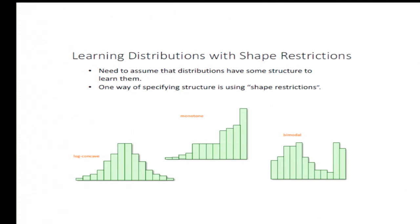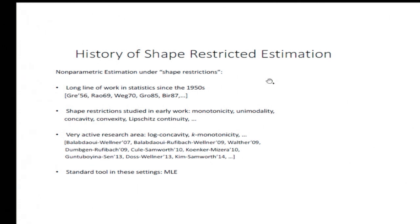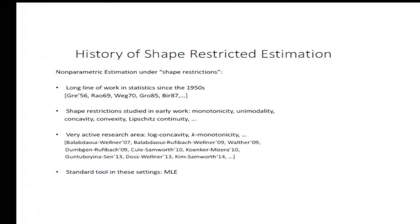Whenever we have a problem like that, we need some assumption about the family of distributions where the samples come from. Otherwise, it's easy to prove that no finite sample bound is possible. Usually what people have done in statistics is to assume some kind of shape restriction on the density — for example, a monotone density or a log-concave density — and under those assumptions, try to design sample and computationally efficient algorithms.